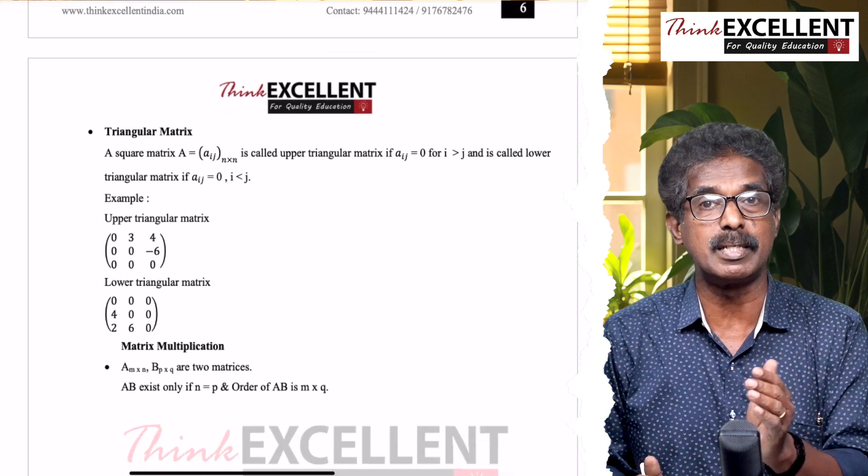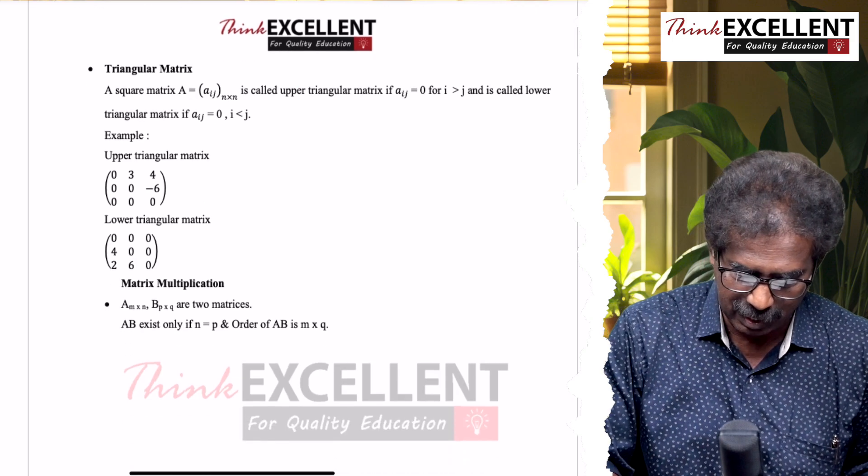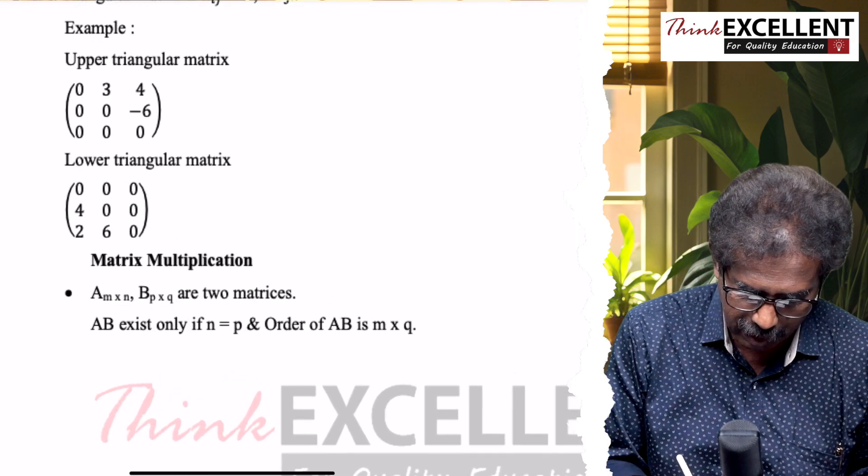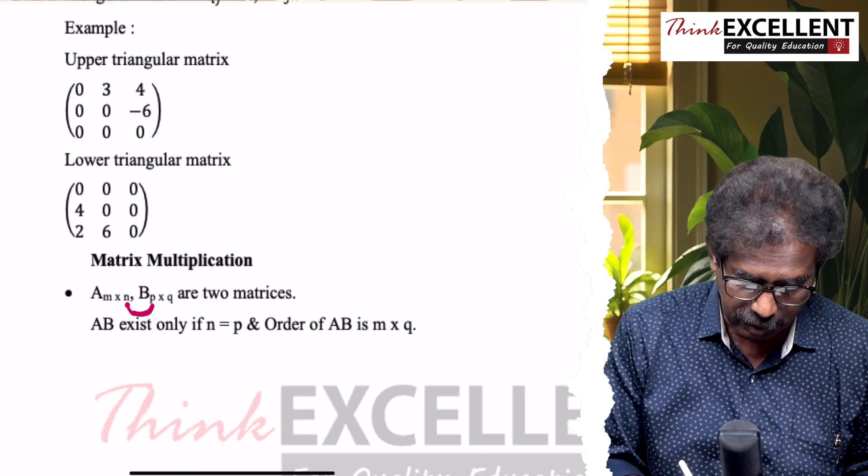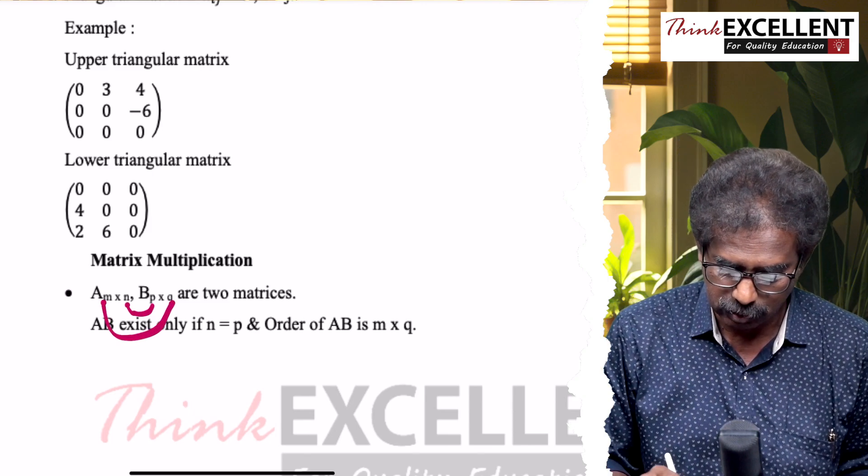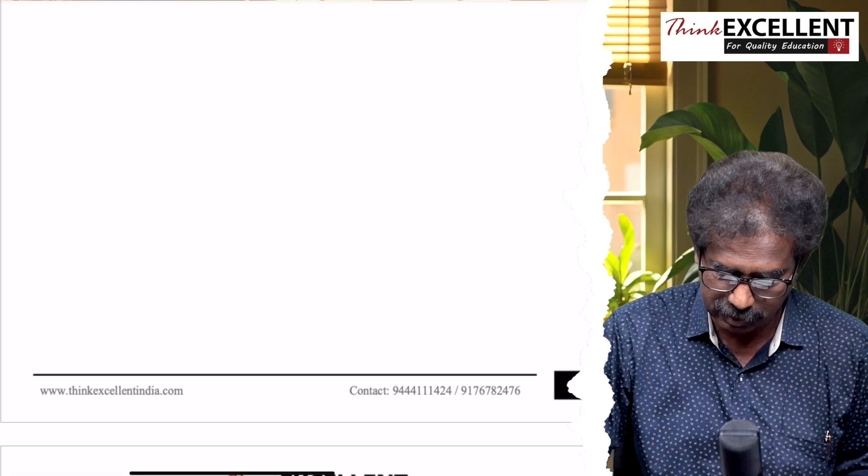Transpose of a matrix - very simple. Row and column you have to interchange. Suppose A is m×n, A transpose is n×m. Triangular matrix: upper triangle, lower triangle. Matrix multiplication - when can you multiply two matrices? First matrix number of columns equal to number of rows of the second matrix. Answer order: first two, last two. That is algebra.